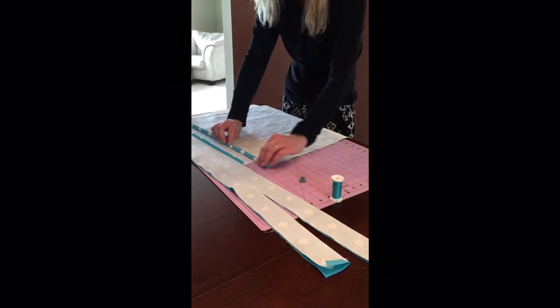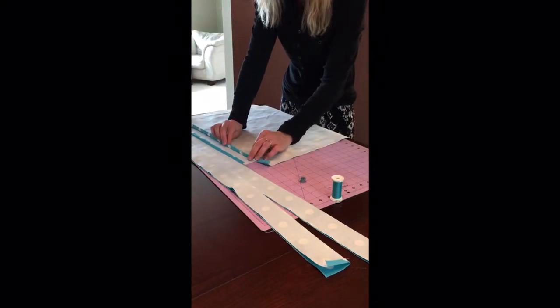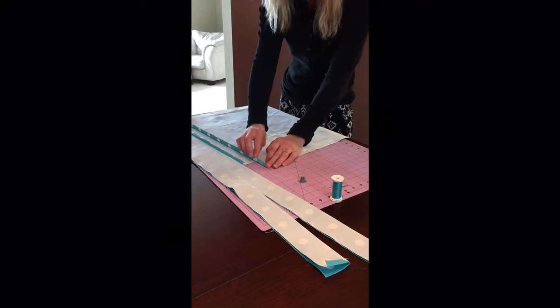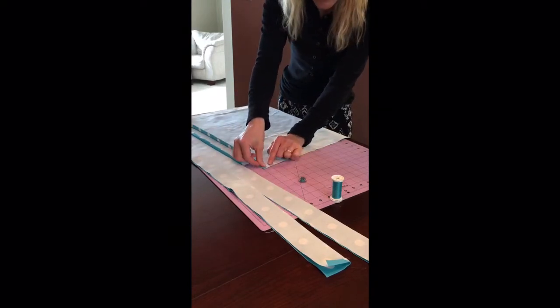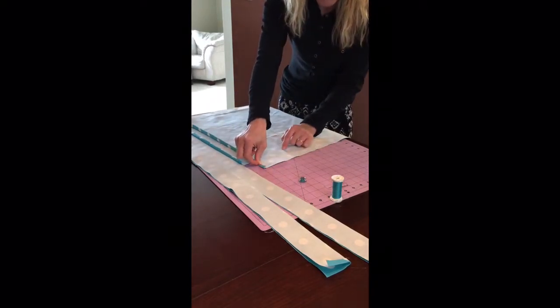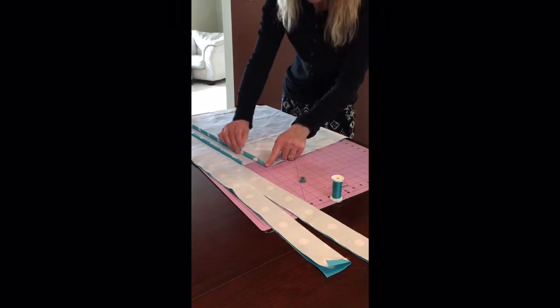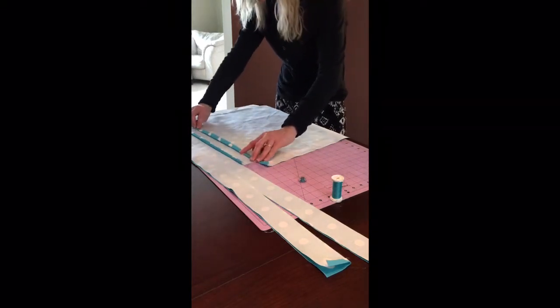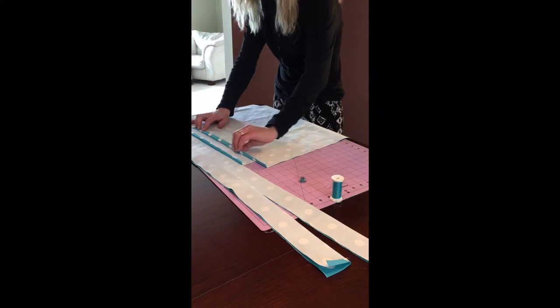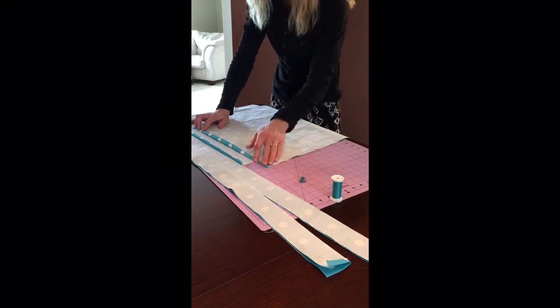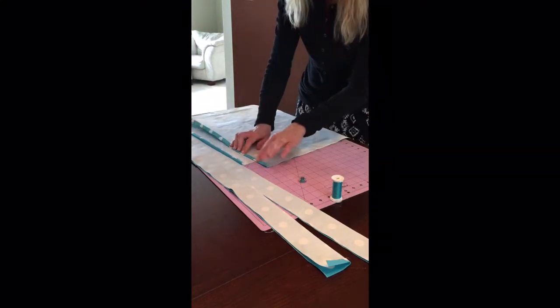Now in order to get prepared to make the bag, I took my two rectangles and I folded a quarter inch, pressed, folded another quarter inch and pressed. The reason I did this is that we're not lining this bag. So we're going to want to finish the edges to look a little more polished.